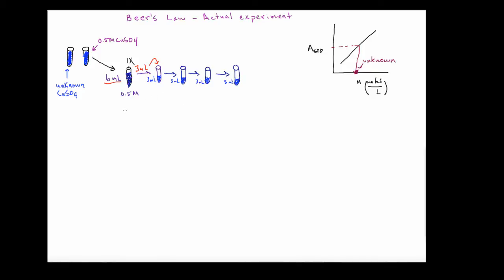From a practical standpoint, I'll also explain exactly how I run this experiment. First, I need a data table — columns for copper sulfate concentration and A620. Before making any transfers, I'll go ahead and measure the A620 of the 0.5 molar solution. Make sure you blank the instrument well. If you're using a Spec 20 in the lab, I usually blank it two or three times to make sure it's well blanked. Set up another tube with 6 mL of distilled water — this is your blank. This technique works fine whether you're using copper sulfate or something like cobalt chloride.